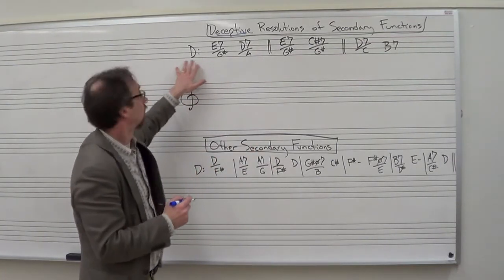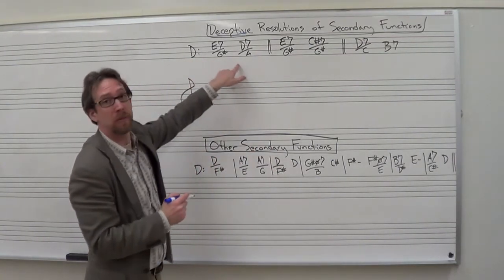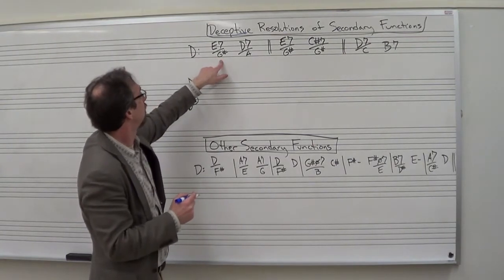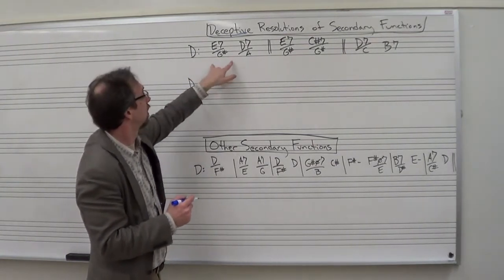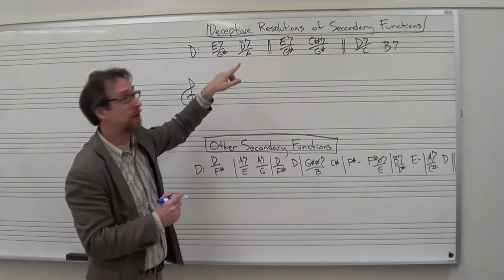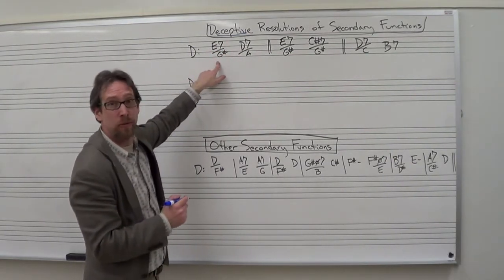If we look at here, we have D major, and I wrote some lead sheet symbols, an E7 over G sharp to a D7 over A. This is an example of a deceptive resolution. Let's analyze it with Roman numerals.